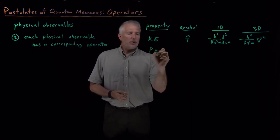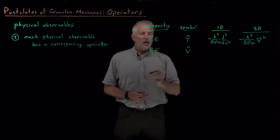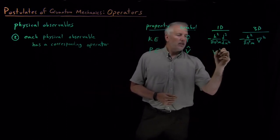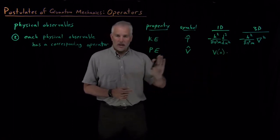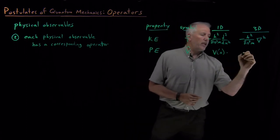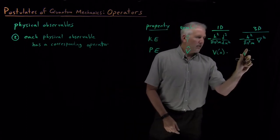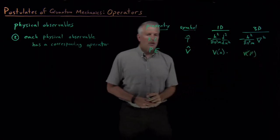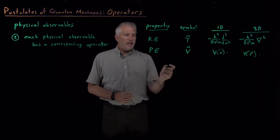Another operator that shows up in the Schrodinger equation is the potential energy operator. And that shows up just as potential energy times the wave function that follows it. Same thing in 3D, except here, we would have a potential energy as a function of three-dimensional coordinates, multiplying whatever wave function comes after it.